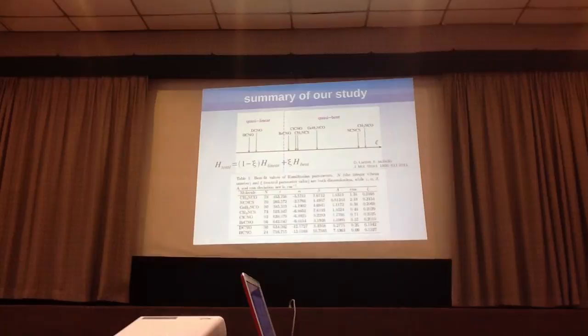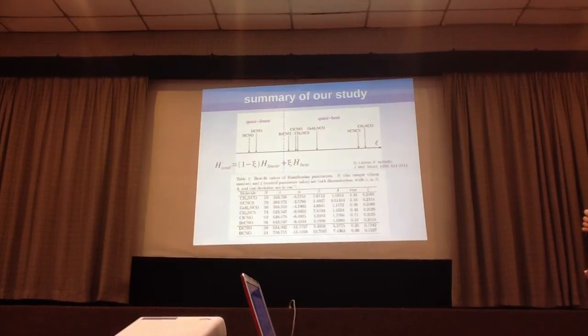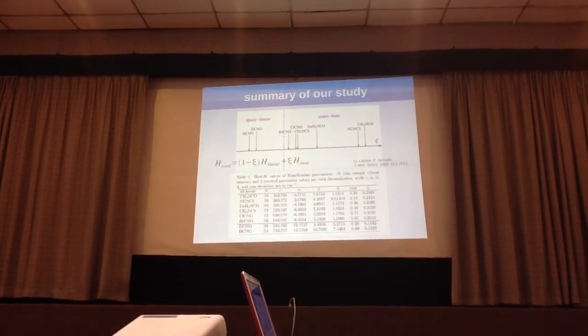Everything to the left is quasi-linear, everything to the right is quasi-bent. Using our Hamiltonian parameters that we got out, we were able to give definite assignments on the values of the control parameter to each molecule. This is interesting, we have a whole spectrum of molecules.